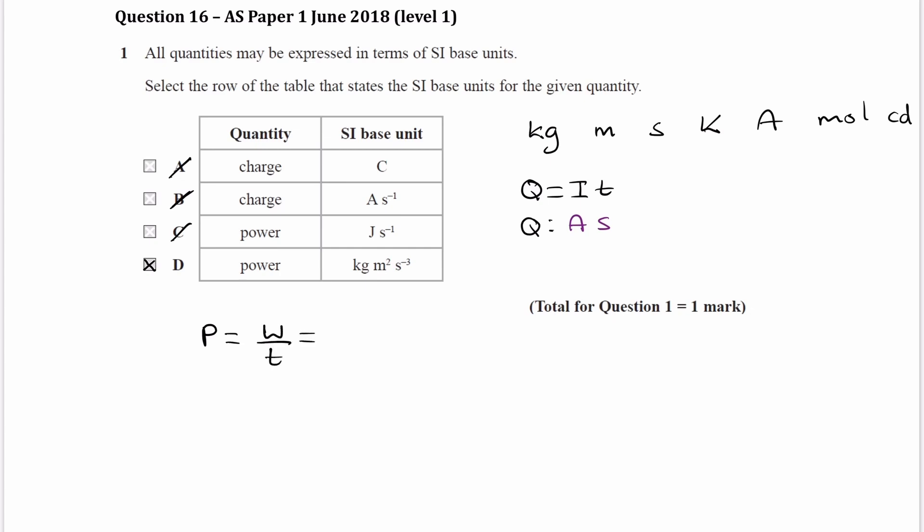I'm going to use power is equal to work done over time. And work done is the same thing as MGH. So work done is just energy. We can use any equation for energy that we want. I've just used gravitational potential energy. Could have used kinetic as well. The reason I've picked this one is because each of the individual quantities, when you break them down, will give you SI base units.